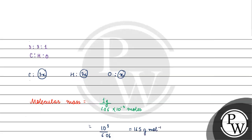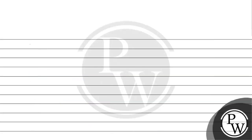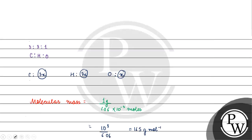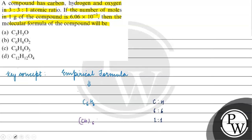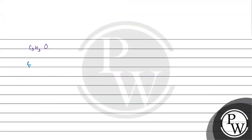Molecular mass is 165 g/mol. Now if we talk about empirical mass — the empirical formula is C₃H₃O based on the 3:3:1 atomic ratio. Empirical mass = 3×12 + 3×1 + 16 = 36 + 3 + 16 = 55 grams per mole.